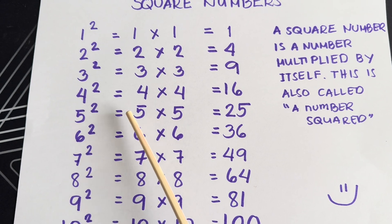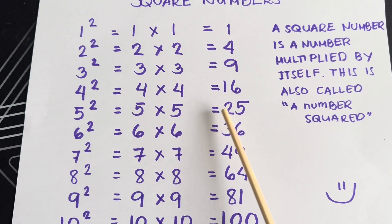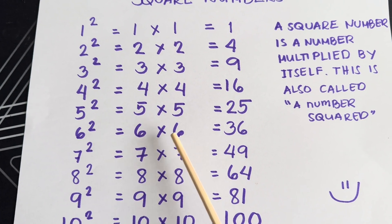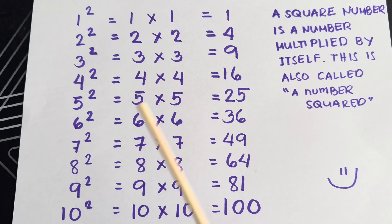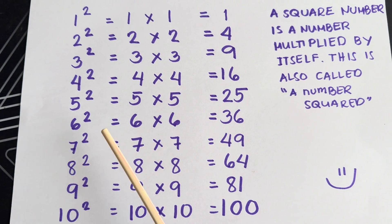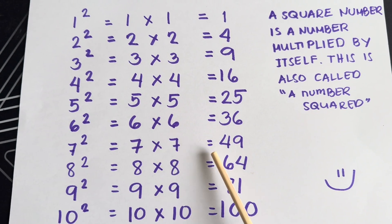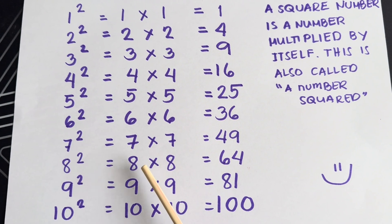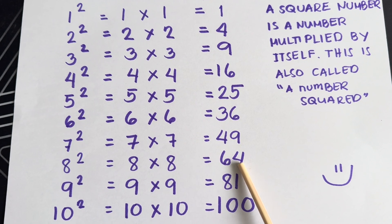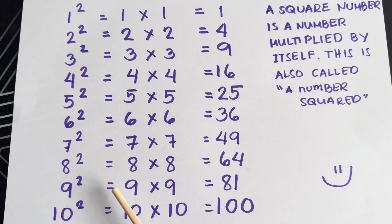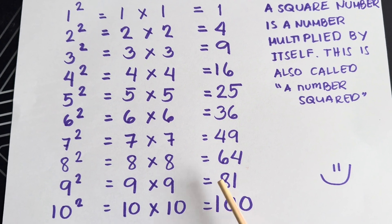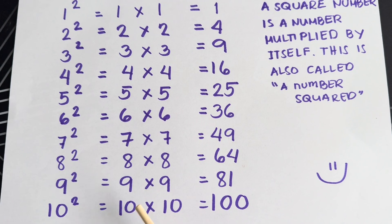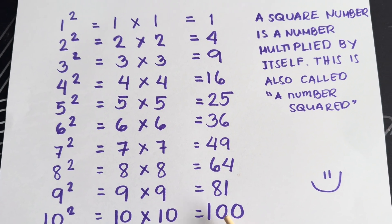5 squared or 5 times 5 is equals to 25. 6 squared or 6 times 6 is equals to 36. 7 squared or 7 times 7 is equals to 49. 8 squared or 8 times 8 is equals to 64. 9 squared or 9 times 9 is equals to 81. 10 squared or 10 times 10 is equals to 100.